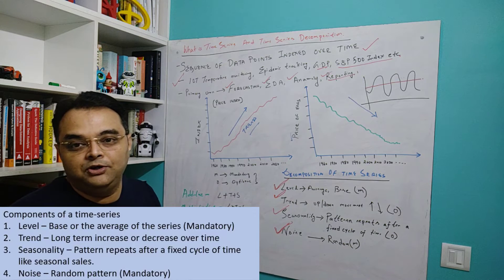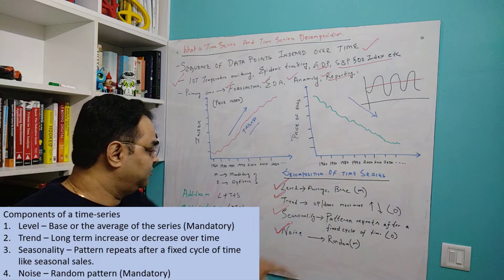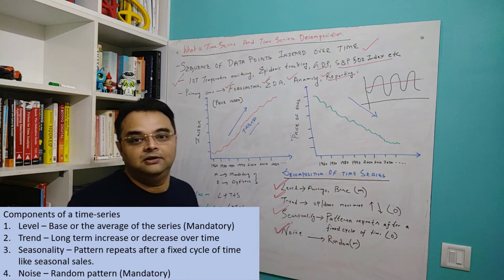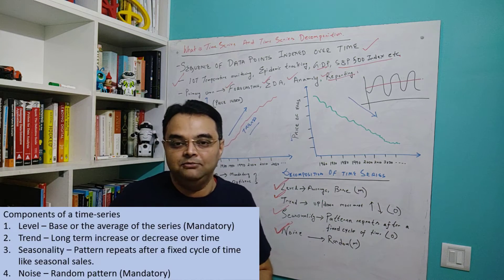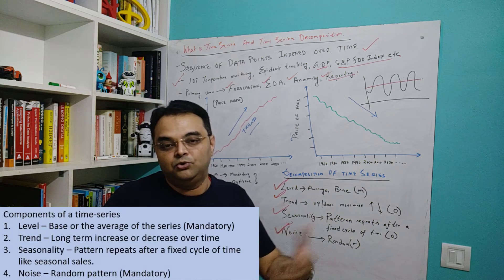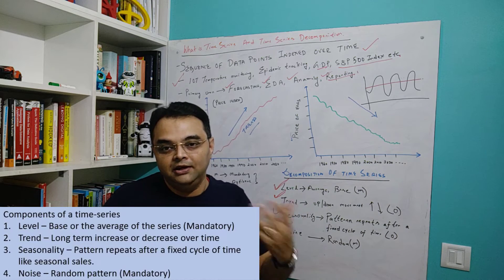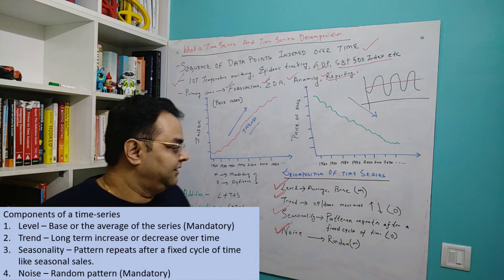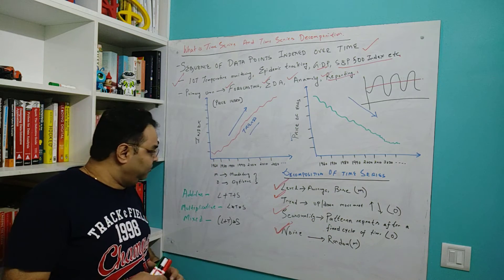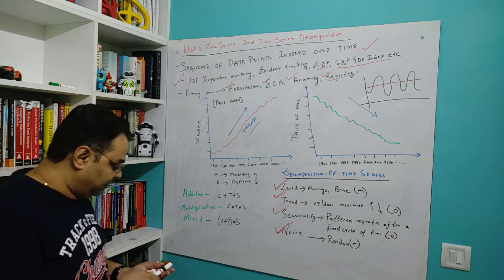As the data points move through time, if we can understand that pattern of seasonality, we can build our forecasting model to predict nearly accurate values based on our seasonality factor if they are present. Now I also need to talk about three models in time series.